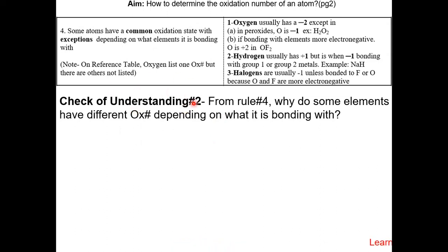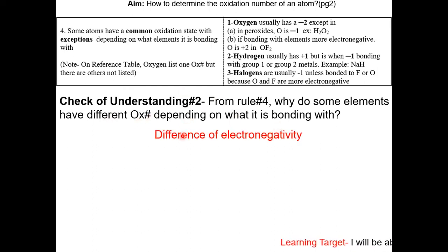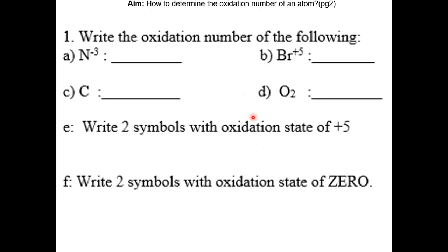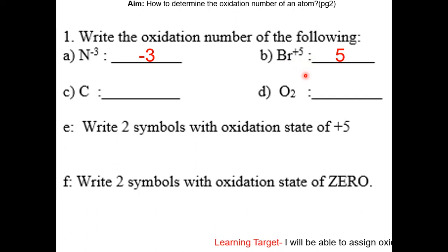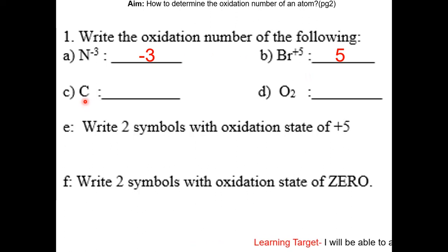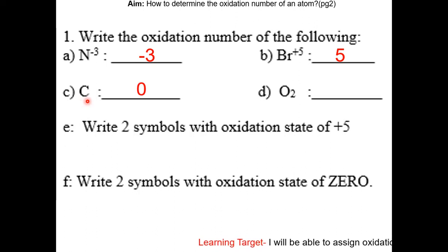Check of understanding number 2: from rule number four, why do some elements have different oxidation numbers depending on what they're bonding with? Because of the difference in electronegativity. Write the oxidation numbers of the following: N³⁻ has an oxidation number of minus three (rule two). Br⁵⁺ has an oxidation number of positive five — the charge of the ion is the oxidation number. Carbon, since it's neutral and a single atom, has an oxidation number of zero (rule one).